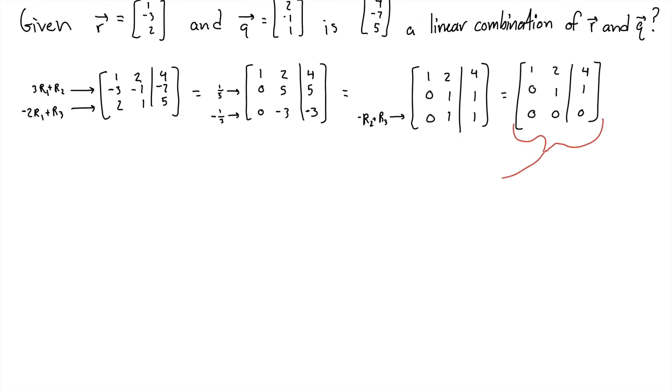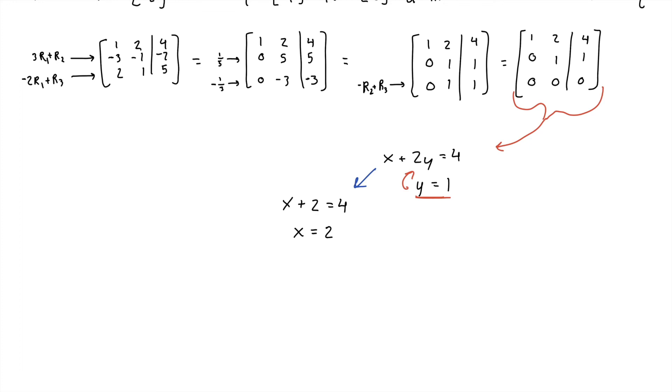Now we're left with the equations right here. X plus 2Y equals 4 and Y equals 1. We know the value of Y, so we can plug it in here. So then this becomes X plus 2 equals 4, so X equals 2. And then we want to write it in this form, X equals XY. X is 2 and Y is 1.